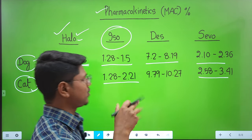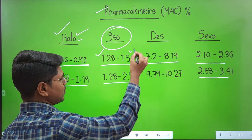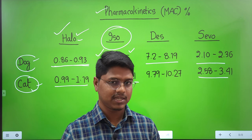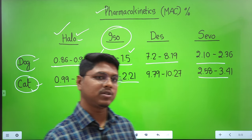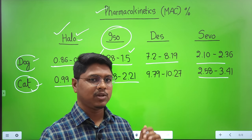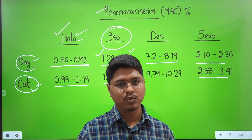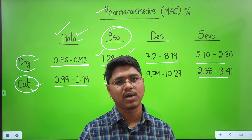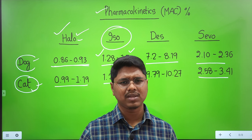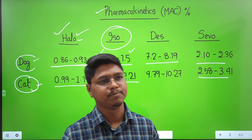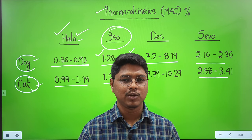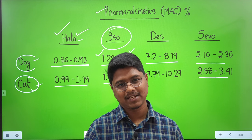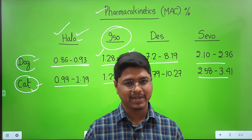In practice, you may start with around 1.2% and check for reflexes — adjusting concentration for each individual patient. Each patient is different and you have to adjust your vaporizer knob accordingly. This is all about volatile anesthetics. We will meet in the next class and discuss gaseous anesthetics — specifically nitrous oxide, which is the only gaseous anesthetic in this series. See you then, take care.